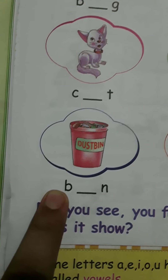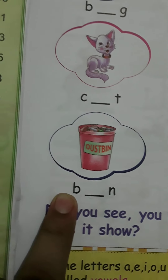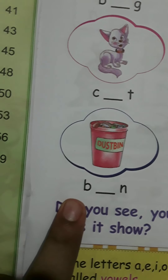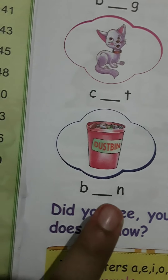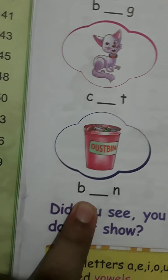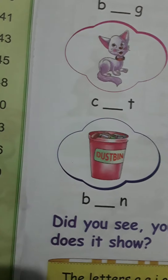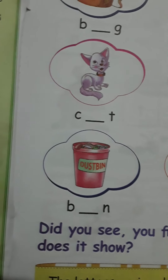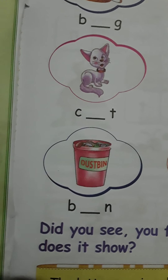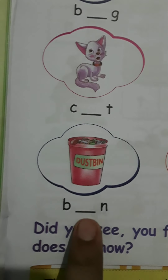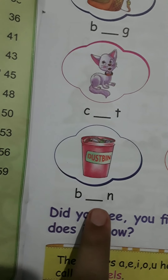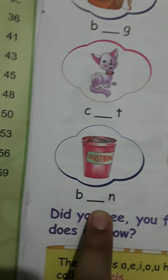Next, we will see what is this. This is a bin — a dustbin is where we throw waste. So what is this spelling? B-I-N. So what is missing here? I. Writing I will complete the word — bin.